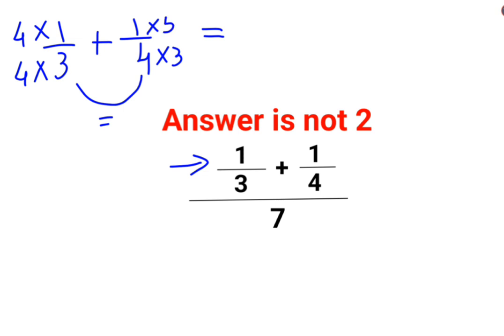So you have 4 upon 12 plus 3 upon 12. So the answer is 7 upon 12. So here I can write this as 7 upon 12 divided by 7.